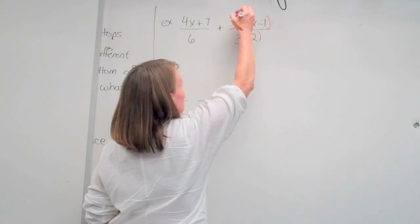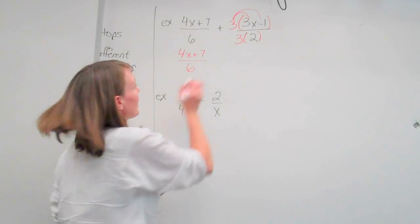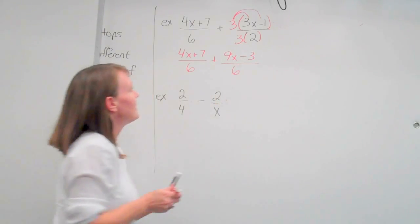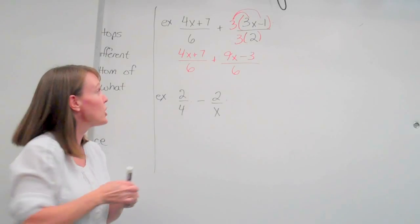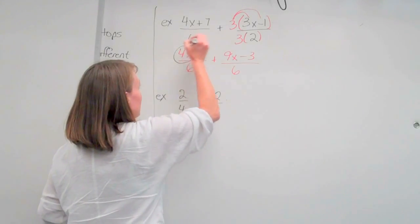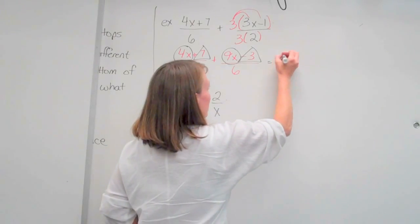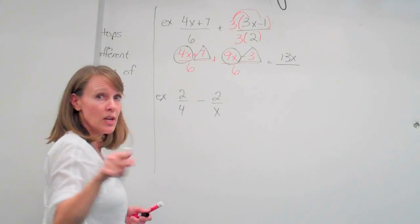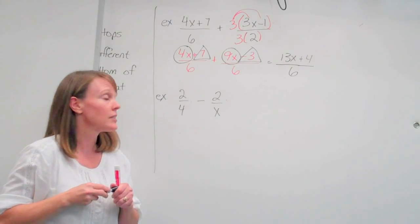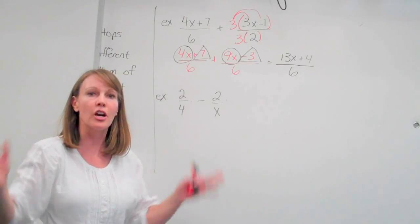Then we're going to distribute here, and we're going to end up with (4x+7)/6 plus (9x-3)/6. We have common denominators, so now we're just going to add the numerators together. Remember, common terms, x's with x's, and numbers with numbers. So we're going to have 4x+9x gives me 13x, and 7-3 gives us a positive 4, all divided by 6. This is our answer because we do not have a common factor, we can't factor, so we're done.